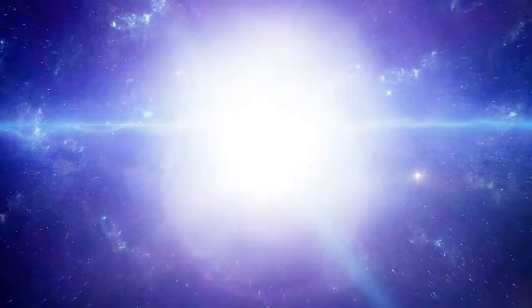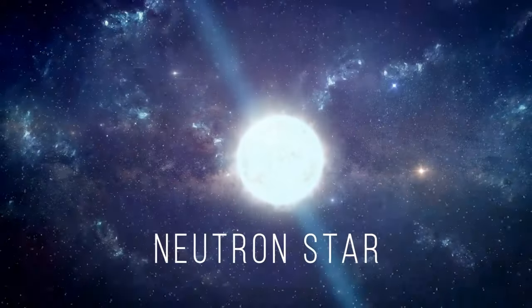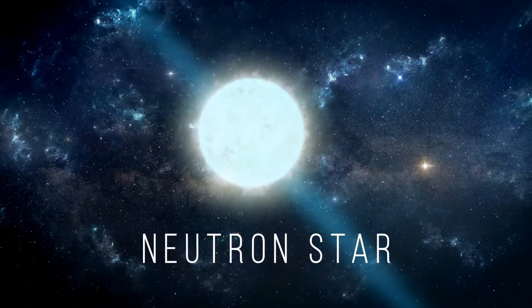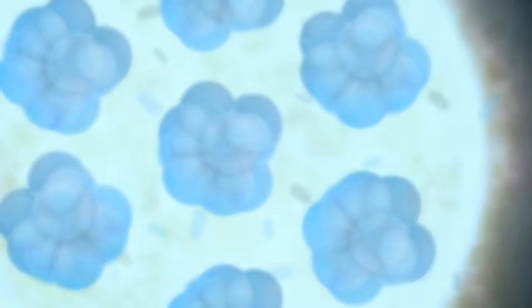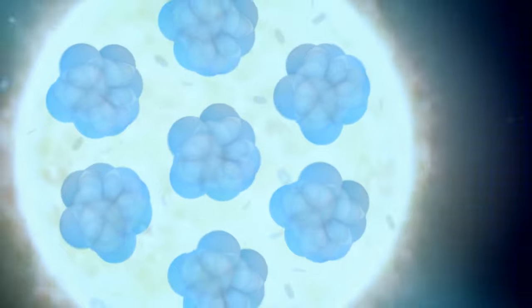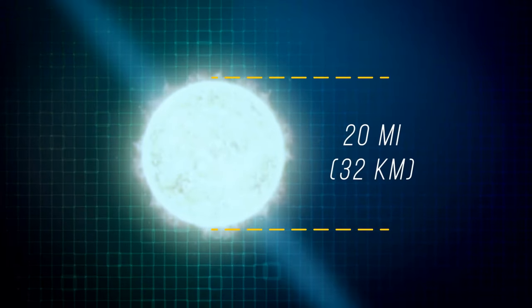If not, it turns into a neutron star. It's basically a giant nucleus, the central part of an atom. These stars are mostly made up of neutrons and are rarely larger than 20 miles across.